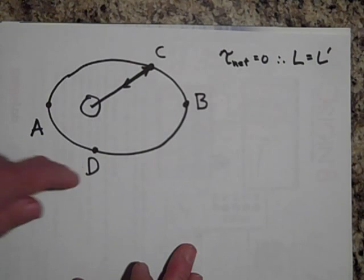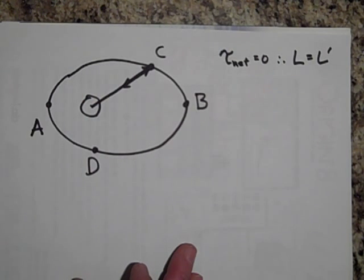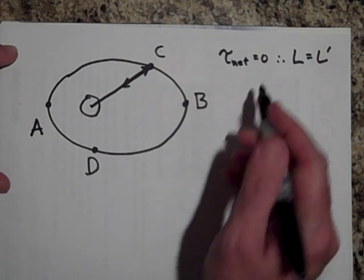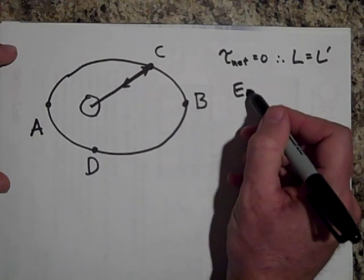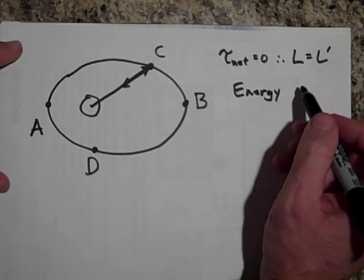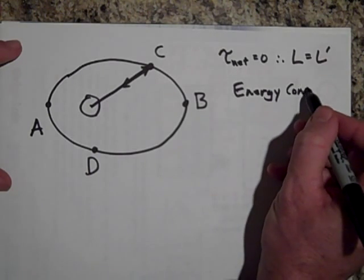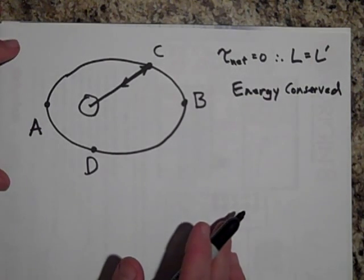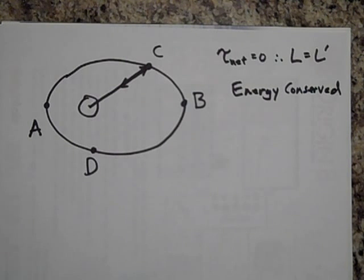Can you tell me in which case A, D, B, or C where does it have the most amount of total energy? Go ahead and pause. Okay, the answer is that it has the same energy at A, D, B, and C. The energy is conserved in an orbit. The total energy is conserved. So angular momentum is conserved and so is the total energy conserved.